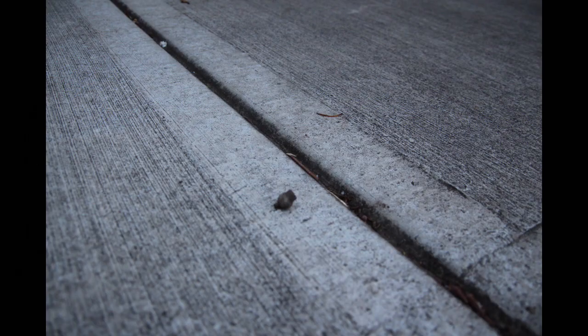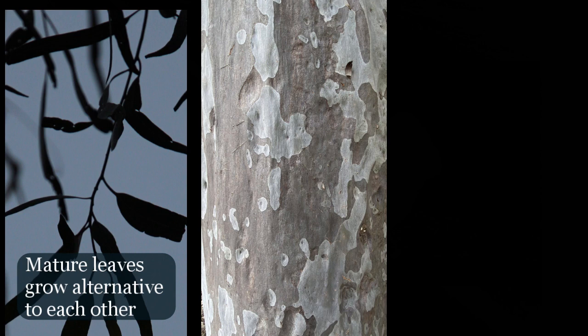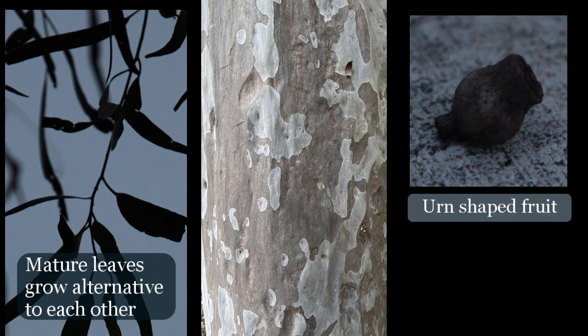We then have to look at the fruit capsule again. This time we find a fruit on the footpath, go in for a closer look, and it's got that urn shape — and that is a corymbia. So this tree, with its mature leaves growing alternate to each other and with the urn-shaped fruit, puts it into the corymbia group.